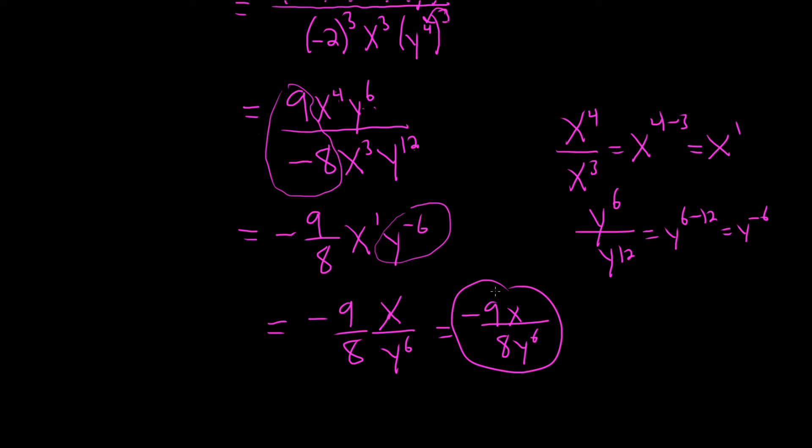That's an acceptable answer. So is this one. Or you can even put the negative out front as follows, negative, and then 9x over 8y to the 6th. So various ways to write your final answer, and also various ways to show the work.